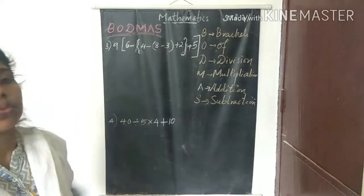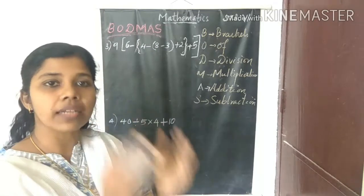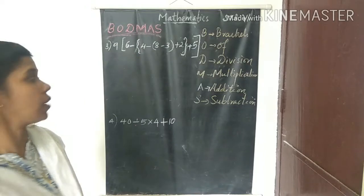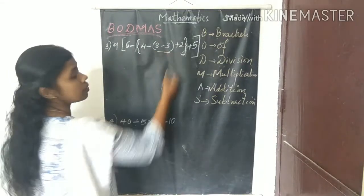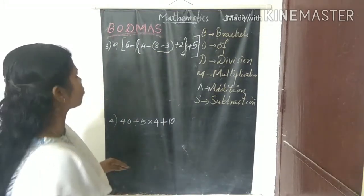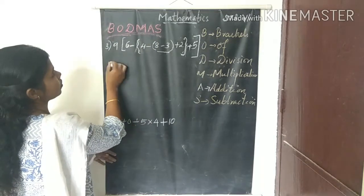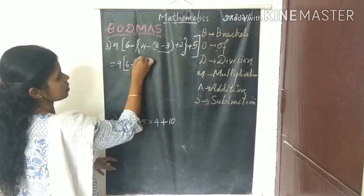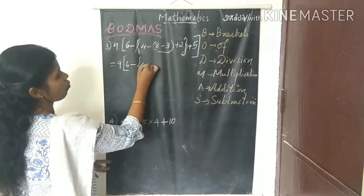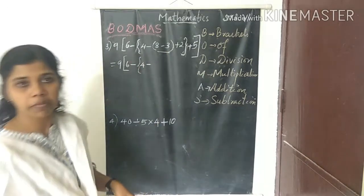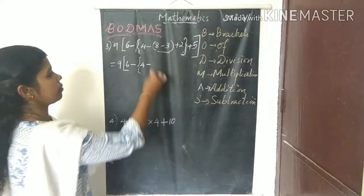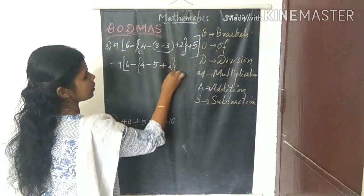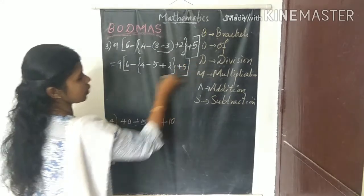The expression is: 9 × [6 - {4 - (8 - 3)} + 5]. First, we do the operation inside the simple bracket. 8 minus 3 equals 5. So we write: 9 × [6 - {4 - 5 + 2} + 5].